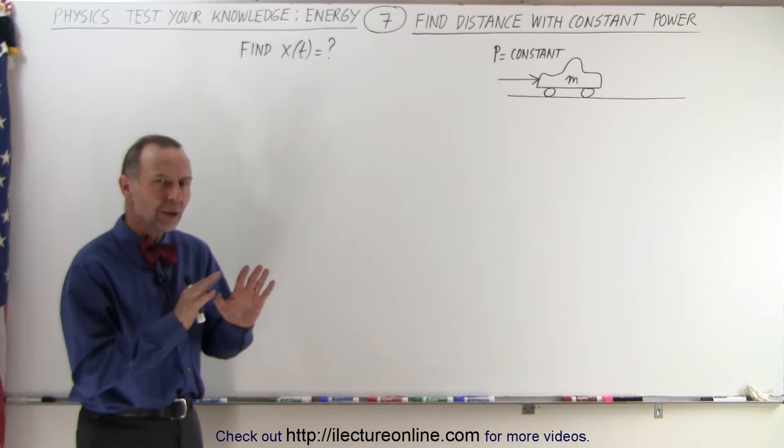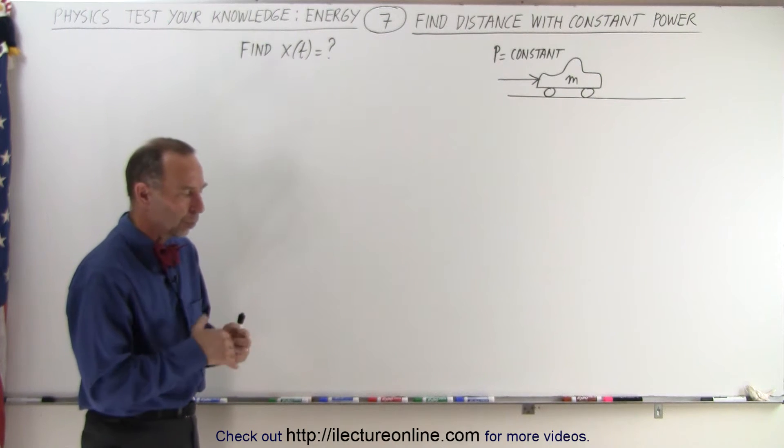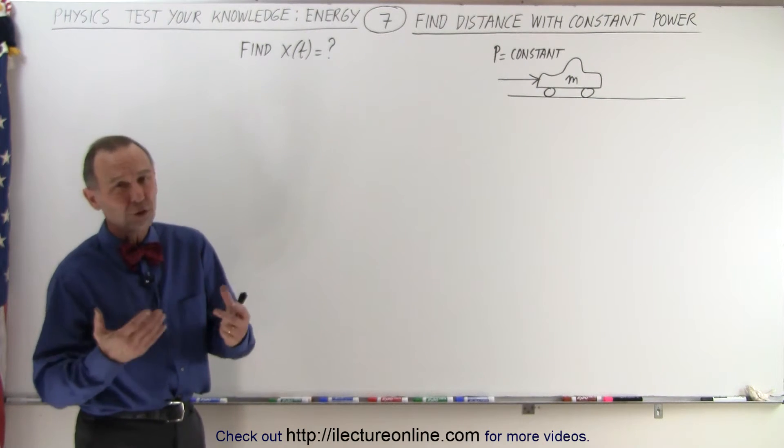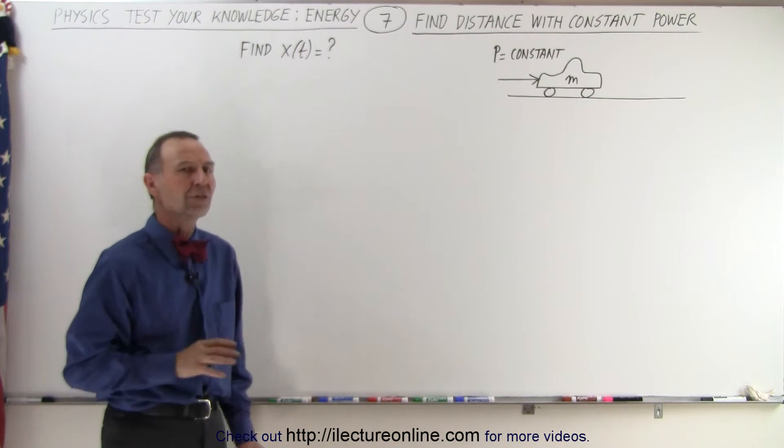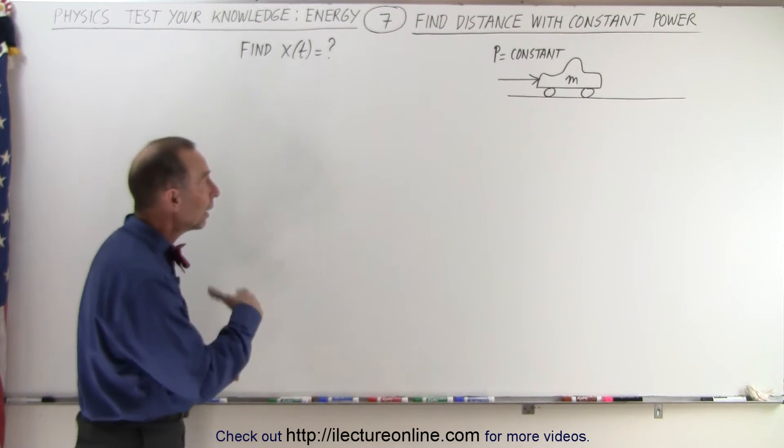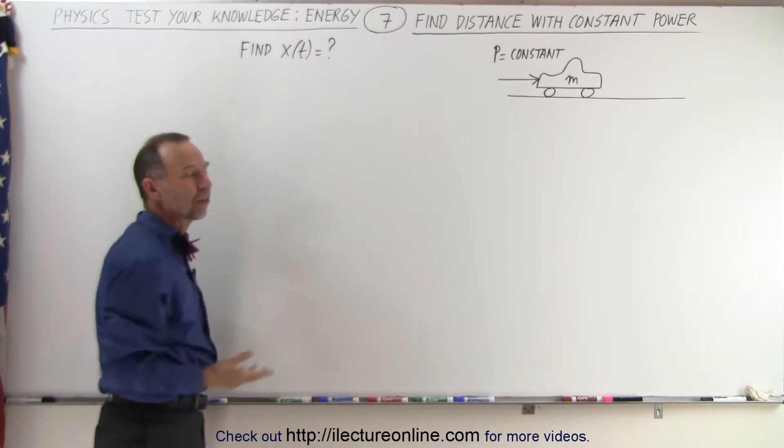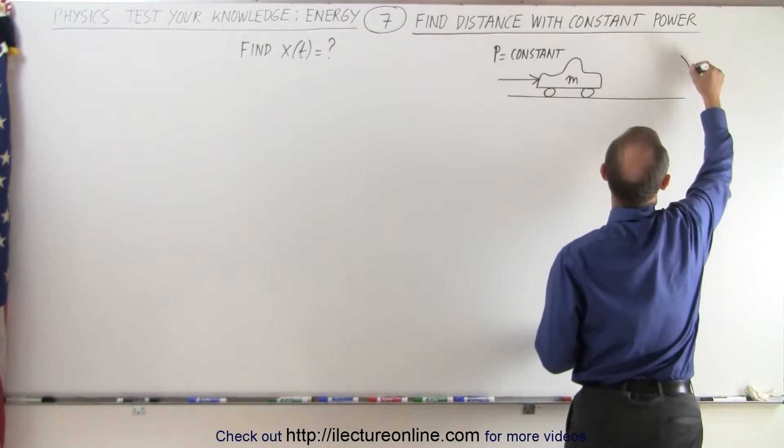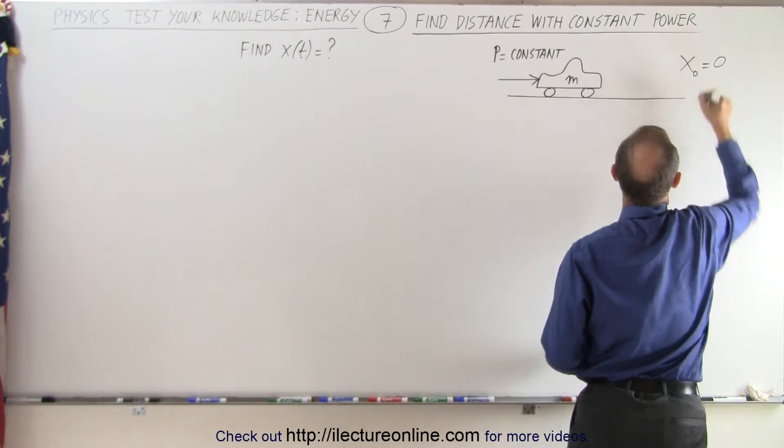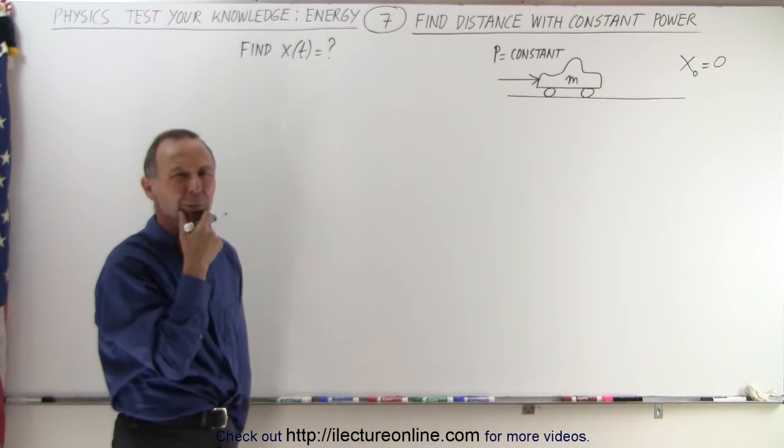and we're applying a power to the car, a constant power. So of course that is really a force, but the force will depend on the fact that the power applied to this car needs to be constant, and what we're trying to determine is the position of the car as a function of time. Let's assume that the initial position x₀ is equal to 0. So when time equals 0, distance equals 0. So how do we do that?